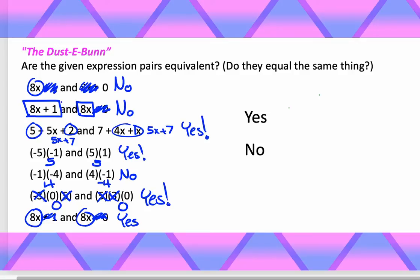Basically, friends, you simplify the left and you simplify the right. And you see if they're the same. If they're the same, you say yes. If they're not, you say no. That's about it for the Dusty Bun. We'll see you in class.